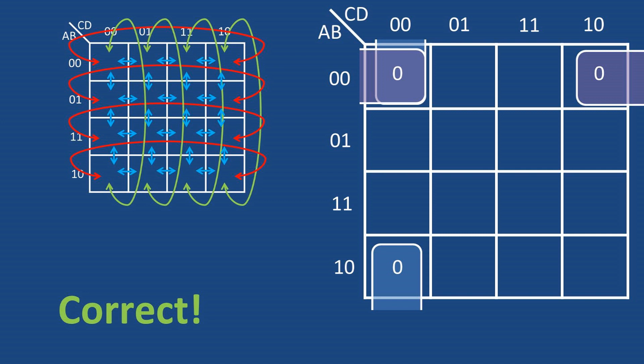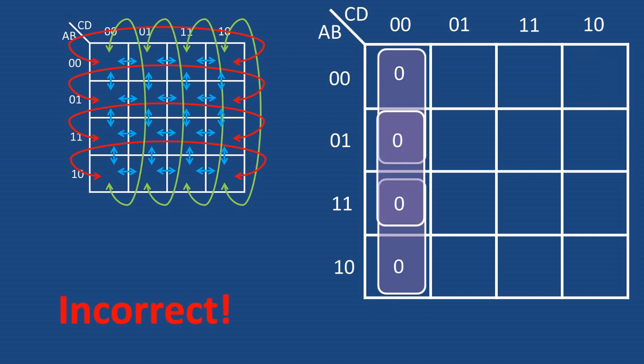Now let's say you have a column of zeros like this. Do you group it like this? No, you group it with the zeros as a single column by four row as depicted.